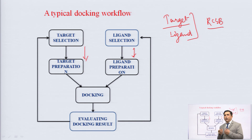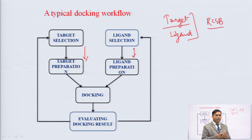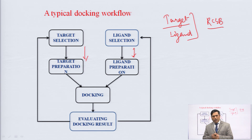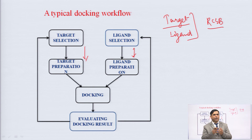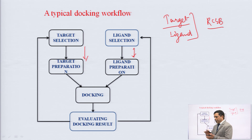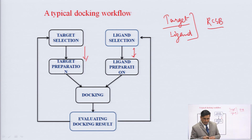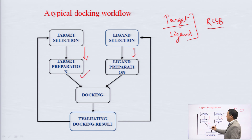We have to remove the extra things during target preparation. Suppose our receptor has different types of chains — chain A, chain B, chain C — and our ligand binds with only chain A. We have to remove the extra chains present. In ligand preparation, there are also various steps we have to follow for proper preparation of the ligand.